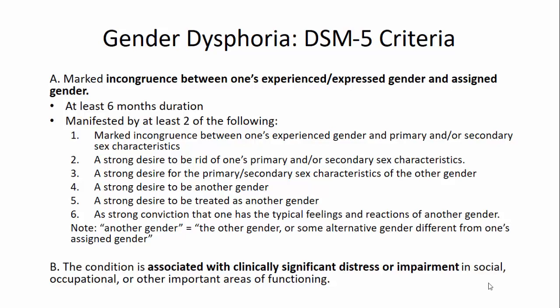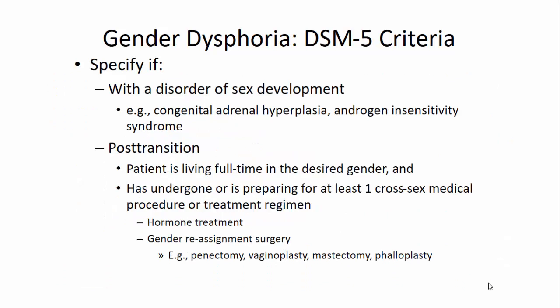In gender dysphoria, we can specify if it's present with a disorder of sexual development, like congenital adrenal hyperplasia or androgen insensitivity syndrome. We can also specify if the patient is post-transition, meaning they're living full-time in their desired gender and have undergone at least one cross-sex medical procedure or treatment regimen — this can be hormone treatment or gender reassignment surgery, such as phalloplasty or mastectomy. With disorders of sex development, there's a tendency to either assign a gender at birth or wait until the child can choose their own gender, which is a newer treatment option.